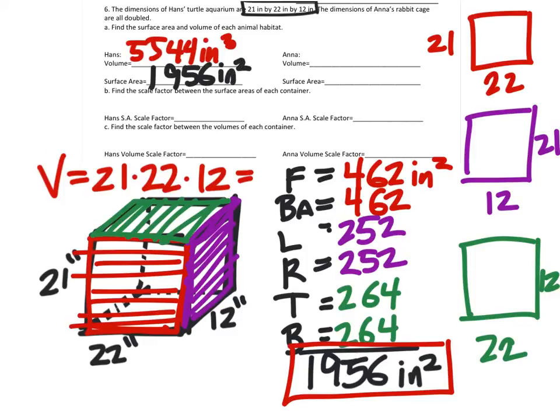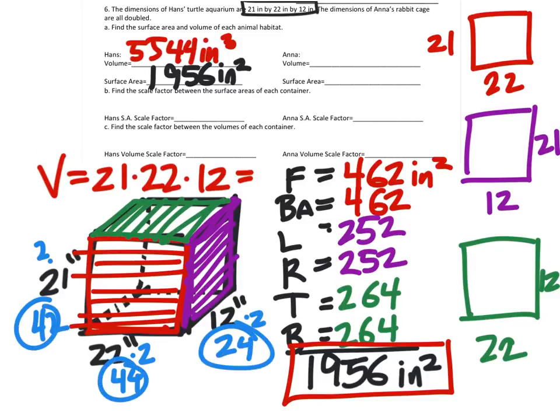Now we could just apply the scale factor on this one, which is actually what I'm going to do to save us a little bit of time. But if you wanted to draw it like we did on the previous example, you could do that as well. Just know that we're going to multiply each of these values by two. Twenty-one times two, so the new length would be forty-two. Twenty-two times two is forty-four, and twelve times two is twenty-four. So it would be a forty-two by forty-four by twenty-four inch rabbit cage.